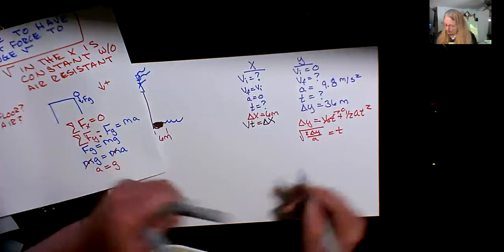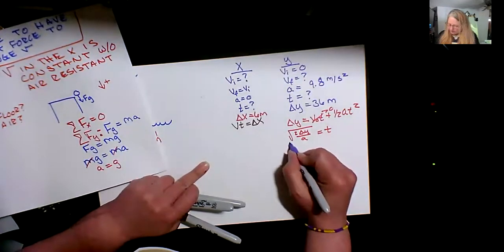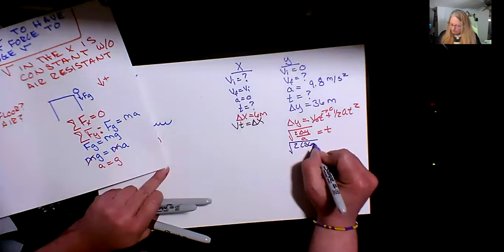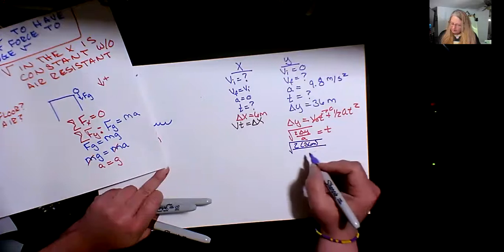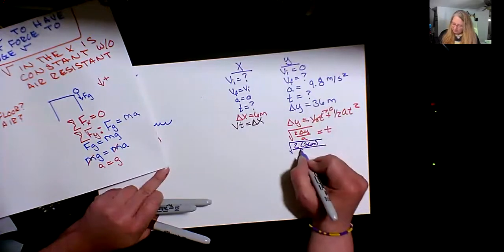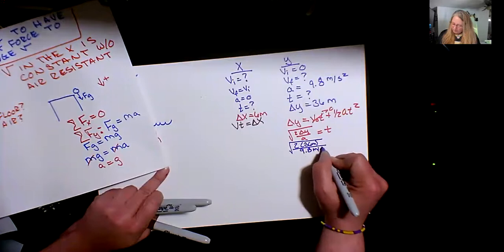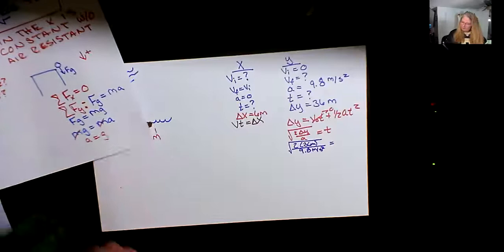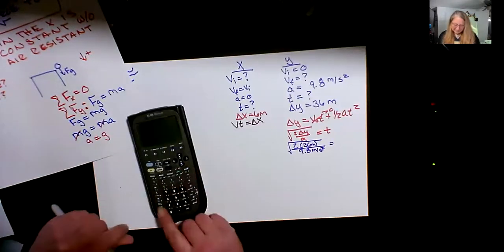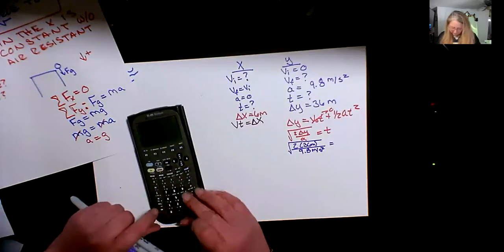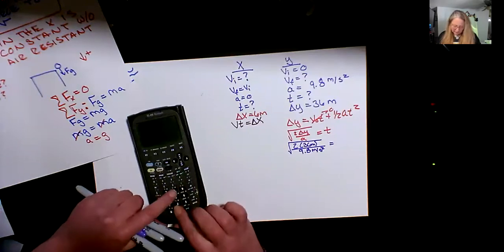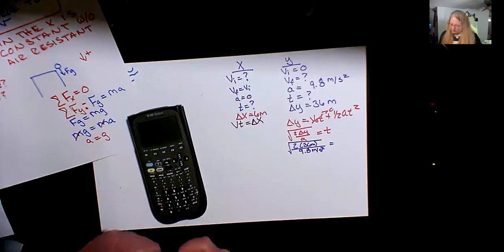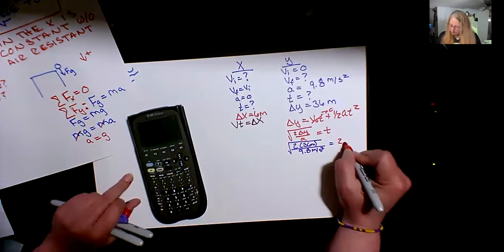Now I can put in my values that I have, this equals, I'll do it down here, this equals 2 times, I'm 36 meters up divided by my acceleration is 9.8 meters per second squared. And that gives me, let's see what that gives me. My husband talking to my dogs, that's what that gives me, 2 times 36 divided by 9.8, and then take the square root of that. And that says that I'm in the air 2.71 seconds.